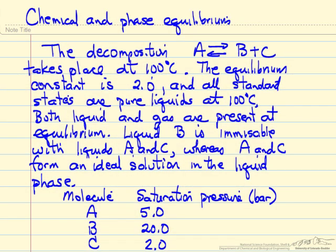This is an example where both chemical equilibrium and phase equilibrium are present. We're looking at a reaction of A decomposing to B and C at 100 degrees C, and we know the equilibrium constant is 2.0. Keep in mind equilibrium constants are dimensionless. The standard states that were used to calculate the equilibrium constants are the pure liquids at 100 degrees C.